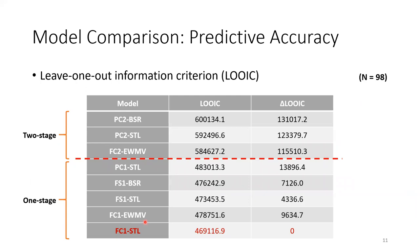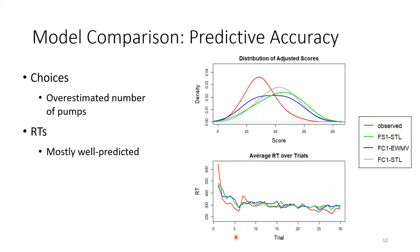A second test was to evaluate predictive accuracy. We collected data from 90 participants and fit the five best performing models from parameter recovery simulations to calculate the leave-one-out information criterion. The one-stage models consistently outperformed the two-stage models in parameter recovery, but we still included three best performing two-stage models for comparison. It is clear that the one-stage models on the bottom outperformed the two-stage models on the top, shown by their lower LOIC values. Out of all these models, the FC1-STL model performed the best. The models tend to overestimate the number of pumps, giving a higher adjusted score related to the worst identifiability of the evaluation parameters, but the RTs could be generally well predicted by these models.